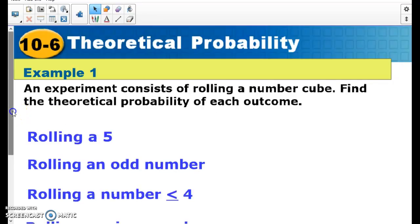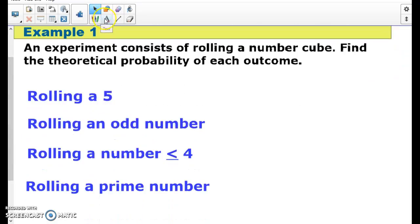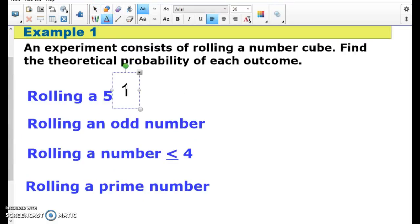So theoretically, if I have a dice, my probability of rolling a five is going to be one out of six. What's my probability of rolling an odd number? Well, I have one, three, five out of six - three out of six is one half. Probability of rolling something less than or equal to four: I have one, two, three, four out of six is two thirds. And probability of rolling a prime number - remember, one is not a prime number. So I have two, three, five - again, three out of six is one half.